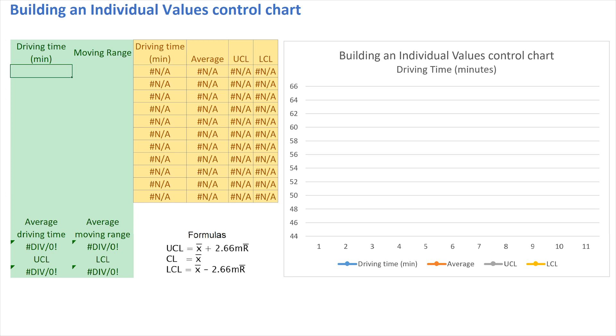And then on the right, we have the plotting area where we will be actually building all these lines and creating the control chart. So as I start with the first value, let's say we're going to enter a driving time of 55 minutes. And this gives us a first dot in the chart, but there's not sufficient information in order to calculate any limits yet.